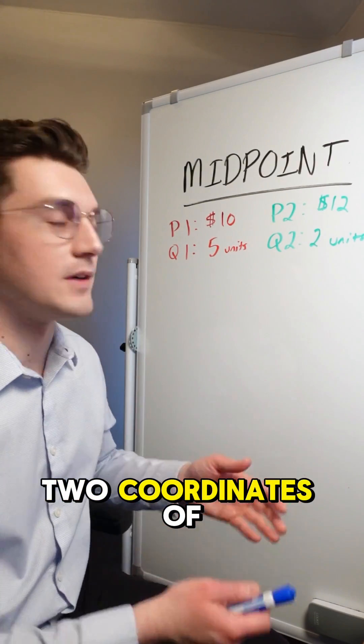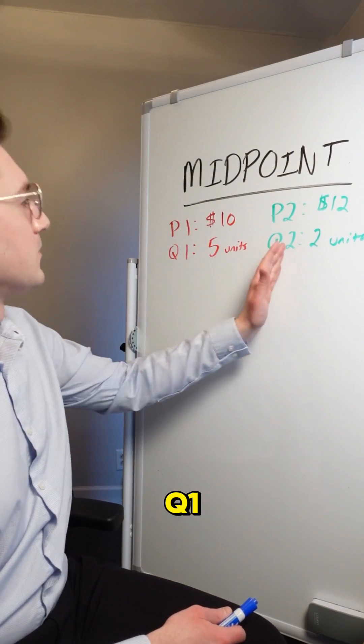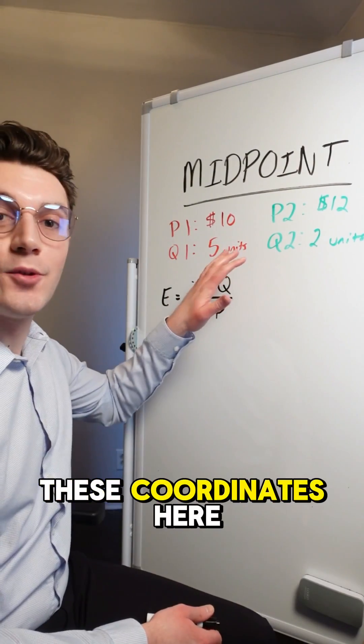You're going to be given essentially two coordinates of price and quantity to compare. We've got P1, Q1, P2, Q2 here. Given these coordinates here,